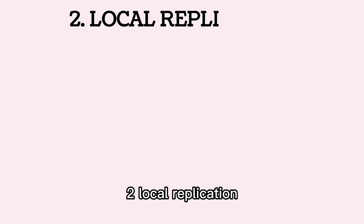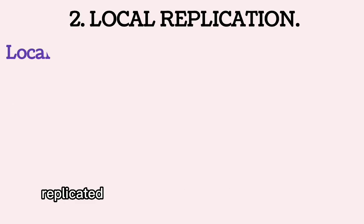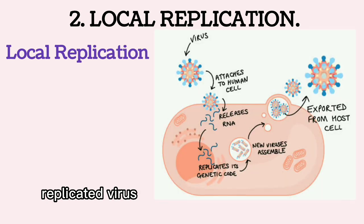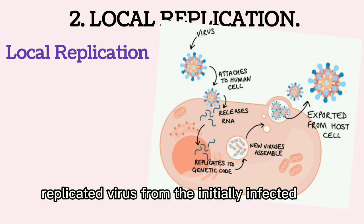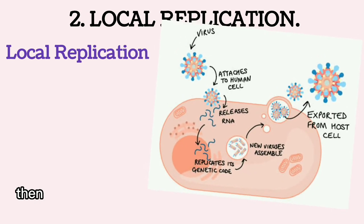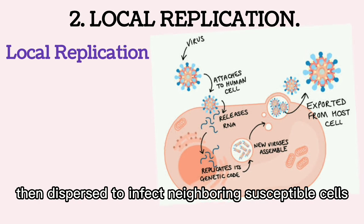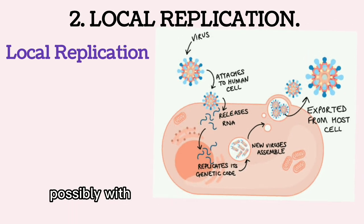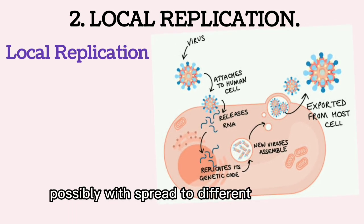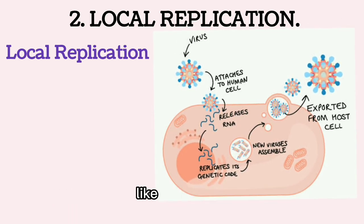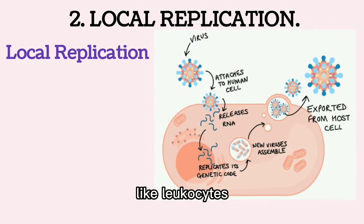Local replication: Replicated virus from the initially infected cell then disperses to infect neighboring susceptible cells, possibly with spread to different cell types like leukocytes.